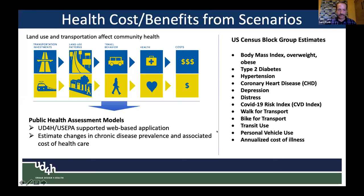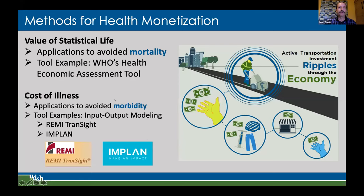Methods for health monetization include: value of statistical life for mortality, and cost of illness for morbidity. On the mortality/value-of-life side, an example tool is the WHO HEAT tool — the Health and Economic Assessment Tool. On the morbidity/cost-of-illness side, examples include input-output modeling such as REMI and IMPLAN, but really NFAM — the tool I just presented, developed by Urban Design for Health — and ITHIM also focused on morbidity.